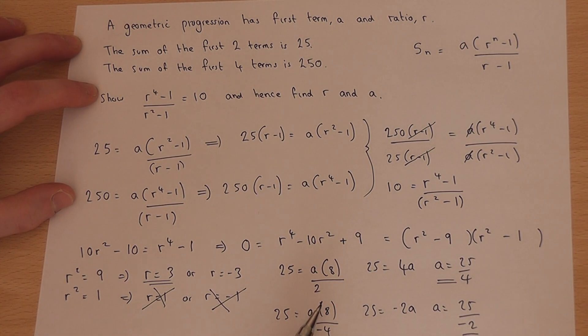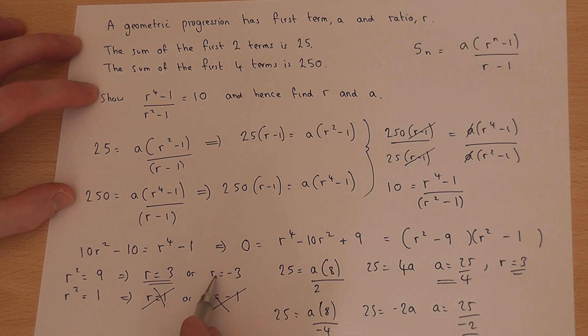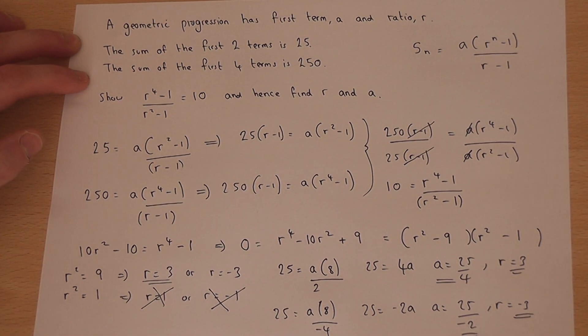So we've got two pairs of values: r is 3 and a is 25/4, or r is minus 3 and a is 25 over minus 2. So here you go.